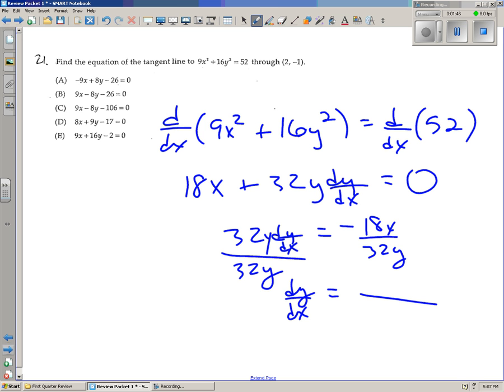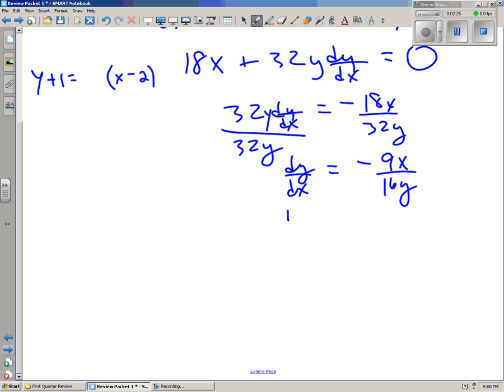We get 32y dy over dx equals negative 18x. Dividing by 32y, we get dy over dx. Negative 18 over 32 reduces. If you divide by 2, it will reduce to negative 9 over 16. So we get dy dx is negative 9x over 16y. So we get negative 9x over 16y. And then we're asking for the equation of the tangent line. So y minus y1 becomes y plus 1 equals some slope times x minus 2. The slope has to be negative 9, x was 2, y was negative 1. So then we get negative 18 over negative 16, which is better known as 9 eighths.